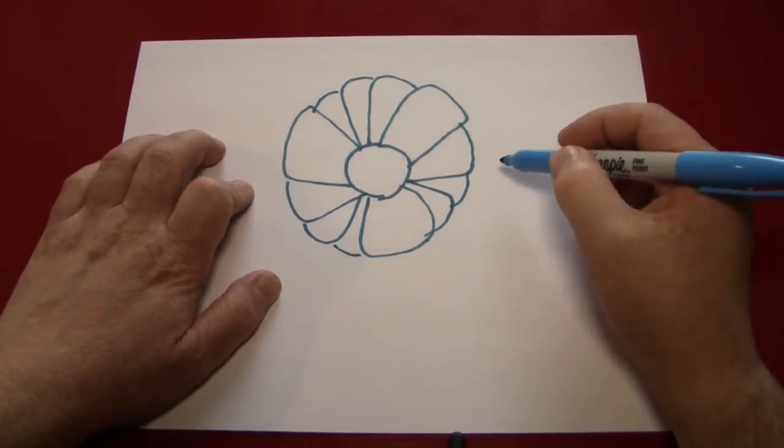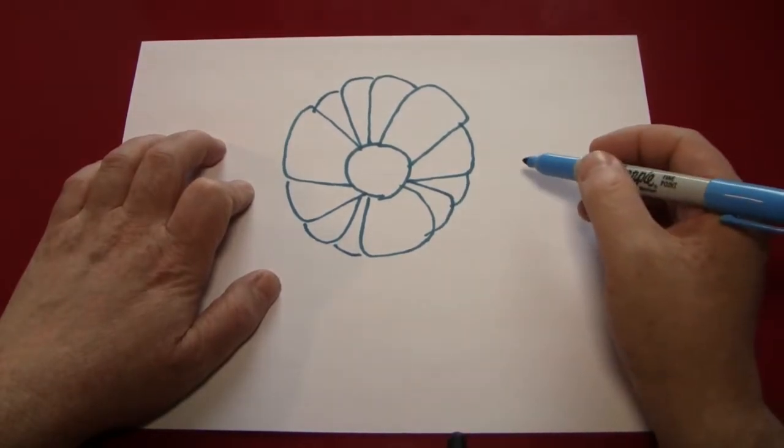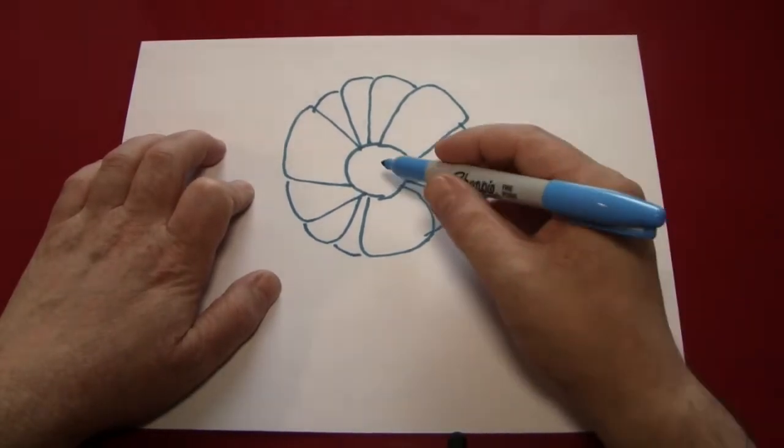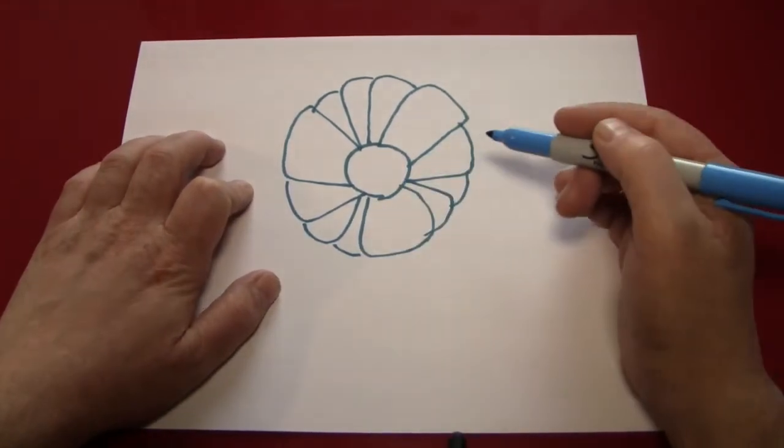Next, we're going to need a stem for the flower. And since this is a pretty big, heavy looking flower, we'll make the stem come out of the side as if the head of the flower is pulling it down.